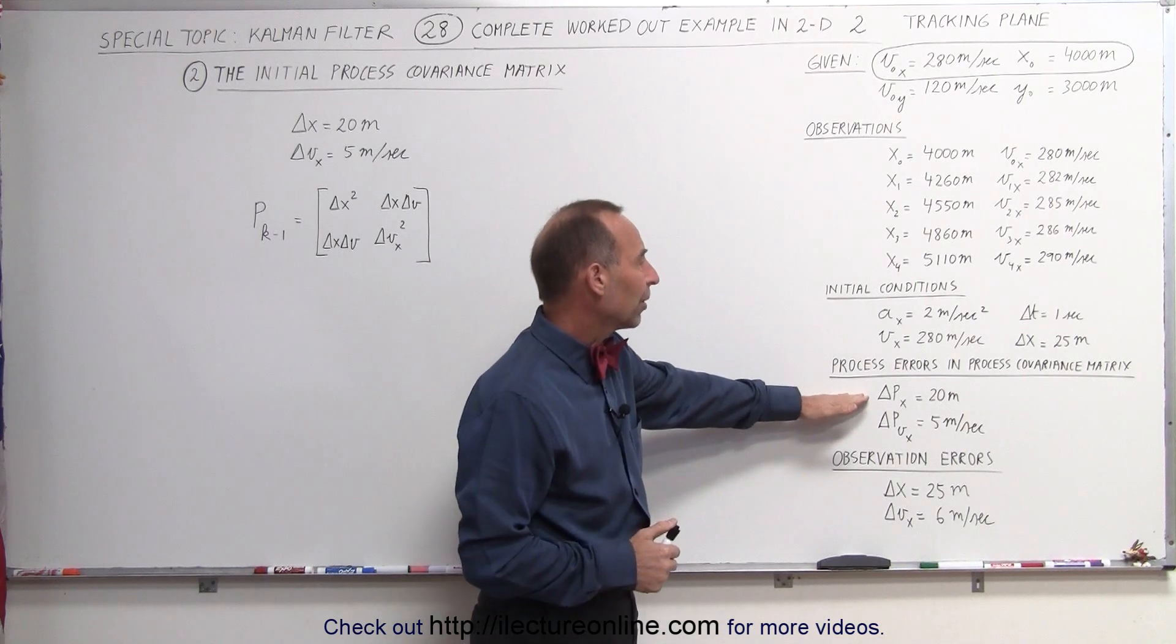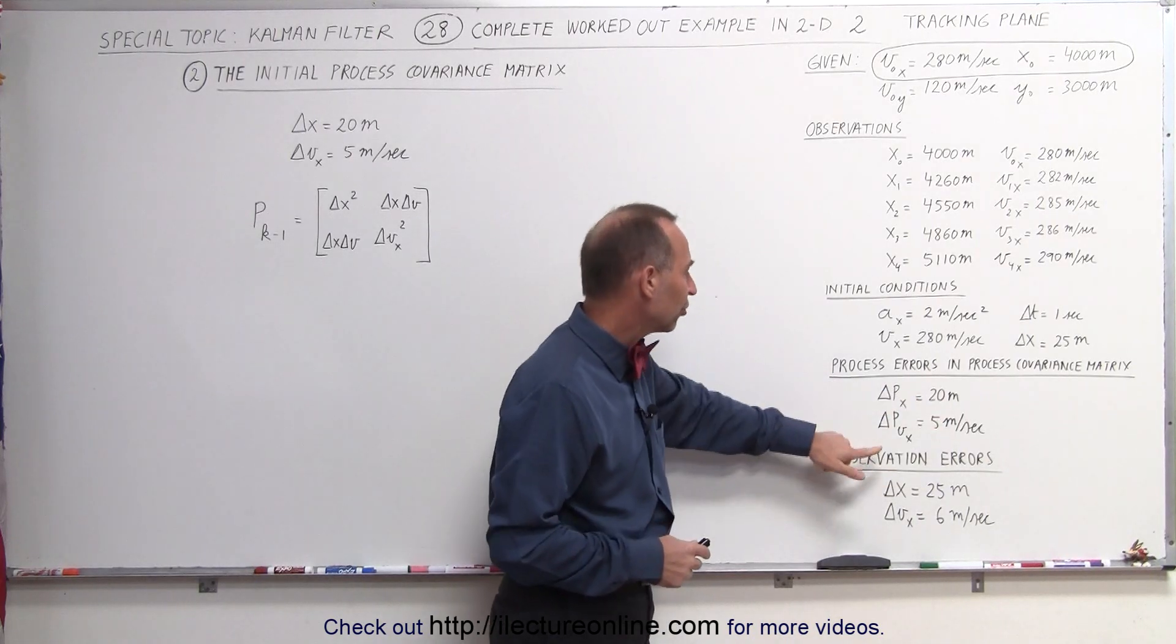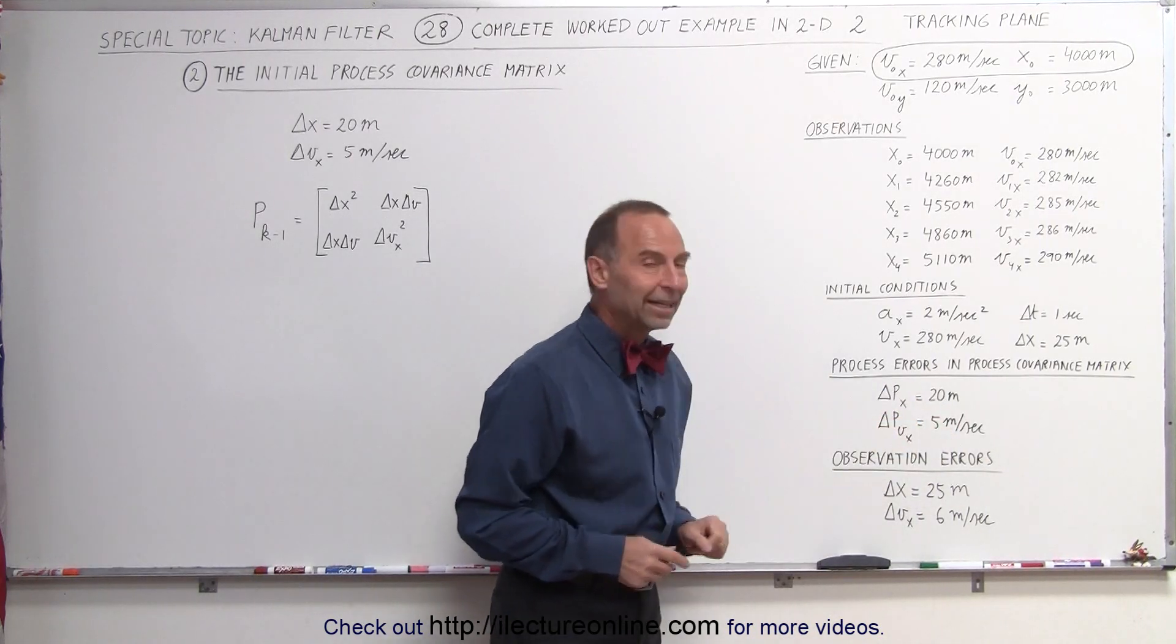Let's assume that the process errors in the process covariance matrix are represented by a difference of 20 meters in the position and 5 meters per second in the velocity.